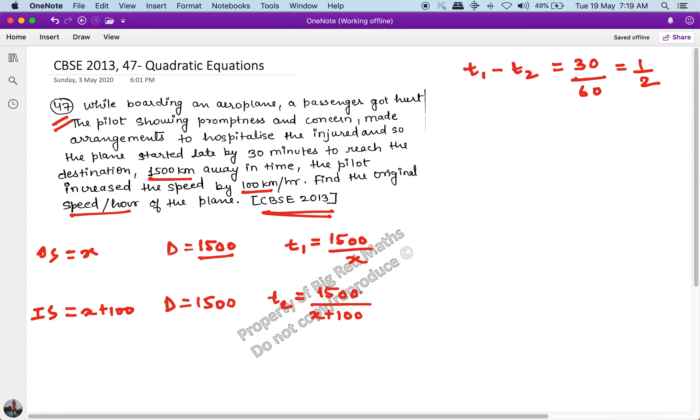So it's saying that T1 minus T2 is half, because when speed increased, half hour time is less. Now I have one equation and two variables to solve. I can write T1, we know what is 1500 upon x, minus T2, we know what is 1500 upon x plus 100, and this equals 1 by 2.